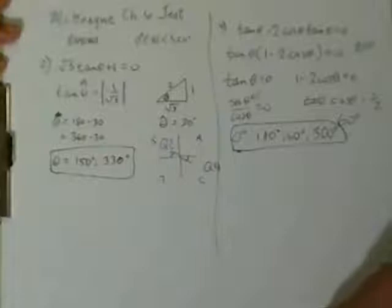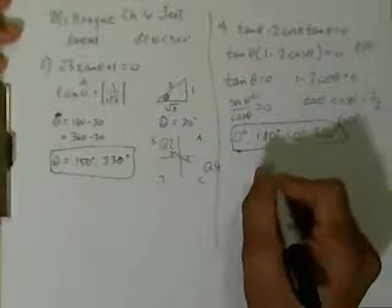Let's check that. Number 4: 0, 60, 180, and 300. The answers are 0, 60, 180, and 300. Perfect.